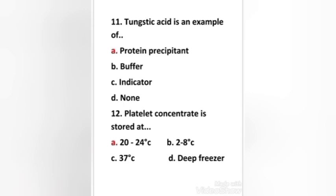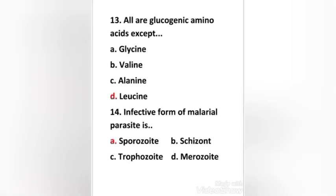The main purpose of protein precipitation is to separate the protein from the solution, either to eliminate interferences or to purify them. Next question: platelet concentrate is stored at — 20 to 24°C, 2 to 8°C, 37°C, or deep freezer? The right answer is option A — platelet concentrate is stored at 20 to 24°C. Platelet concentrate is used to prevent or treat bleeding in people with either a low platelet count or poor platelet function.